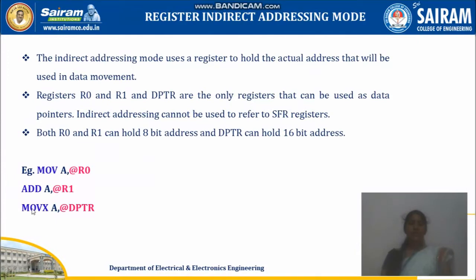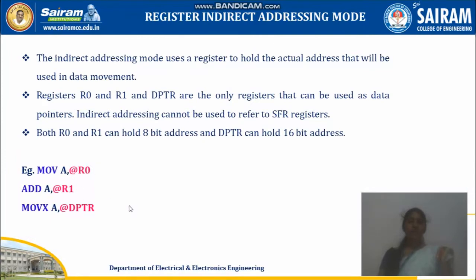MOVX is nothing but external memory access. The data pointer will hold a 16-bit address indirectly. In indirect addressing mode, you have to specify R0, R1, and the data pointer register. These three registers should be followed with the @ symbol. In case of immediate addressing mode, data is followed by the # symbol, whereas in register indirect addressing mode, the register holding the address is followed with the @ symbol. If you give R3 or R4 instead of R0, R1, or data pointer, the instruction is going to be invalid.